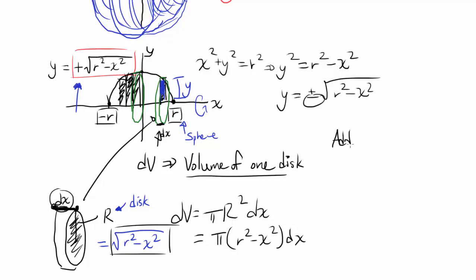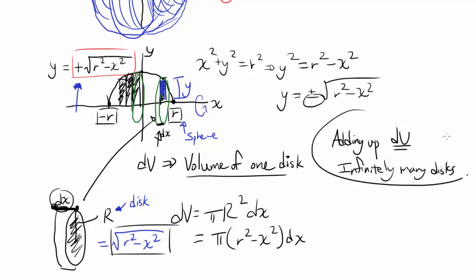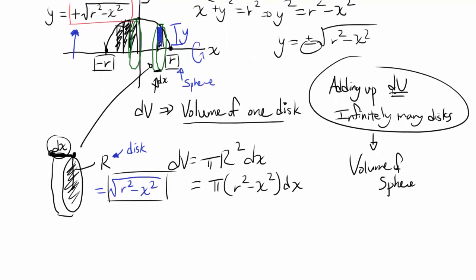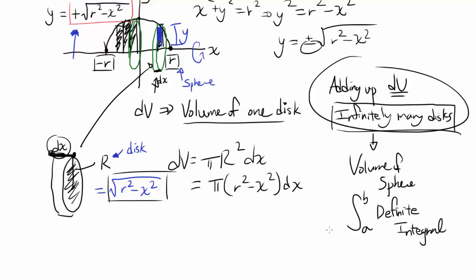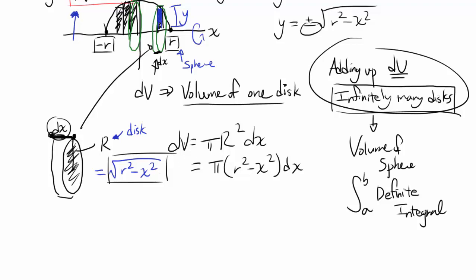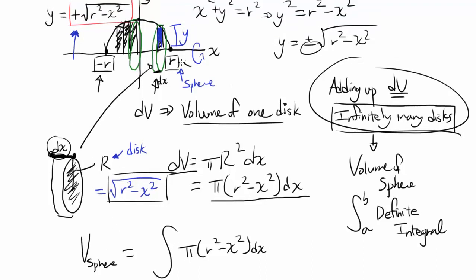We're adding up infinitely many such dv's — the volumes of infinitely many disks — from negative r to r. This summation of infinitely many infinitesimally thin pieces is, by definition, a definite integral. So the volume of the sphere equals the integral from negative r to r of π(r² − x²) dx. We can pull π outside: V = π ∫₋ᵣʳ (r² − x²) dx.